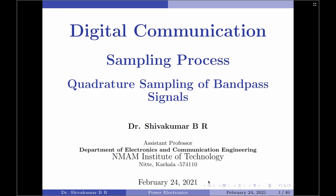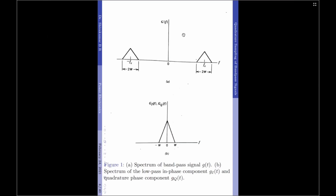One such technique is called quadrature sampling, which is used for the uniform sampling of band pass signals. In one of the interesting characteristics of quadrature sampling, we note that it is actually a scheme which is an extension of the low pass sampling theorem. In this scheme, rather than sampling the band pass signal directly, we first perform a preparatory operation on the band pass signal which will later ease the overall sampling. Let us start by considering a band pass signal g(t) whose spectrum is limited to 2W and centered at fc, as illustrated in figure 1a.